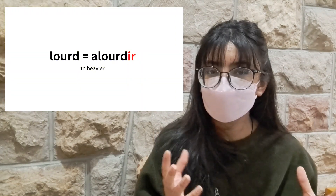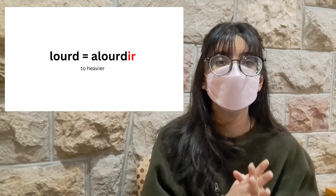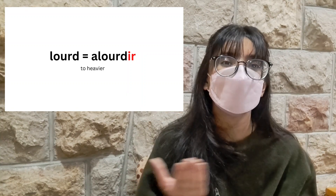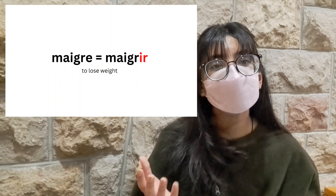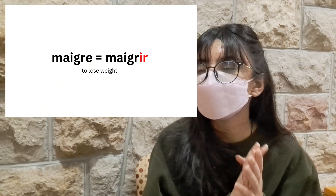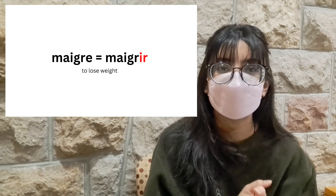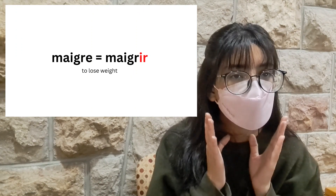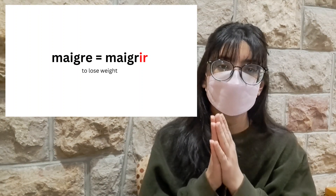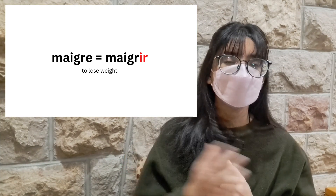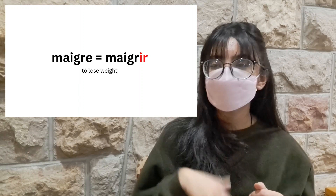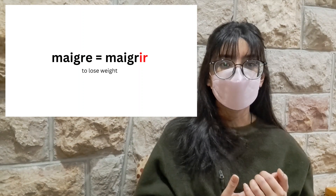Lourd means to be heavy, and alourdir means to make heavier or to weigh down — another way to turn an adjective into a verb. The next one is maigre, which becomes maigrir. For the majority of verbs formed from adjectives, our foremost aim is turning them into an IR verb. Majority of the examples we've discussed so far, if you look at your screen, have all followed this pattern of becoming an IR verb.